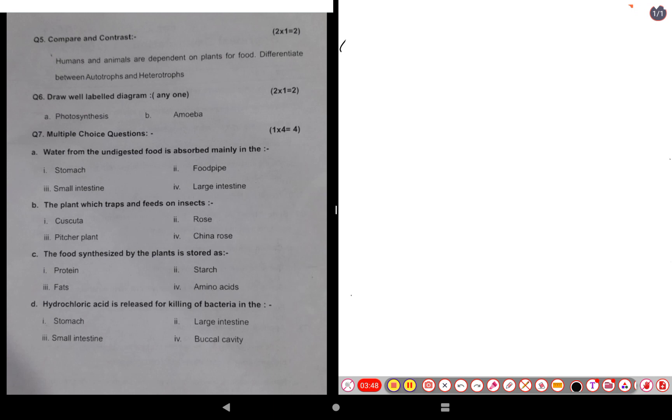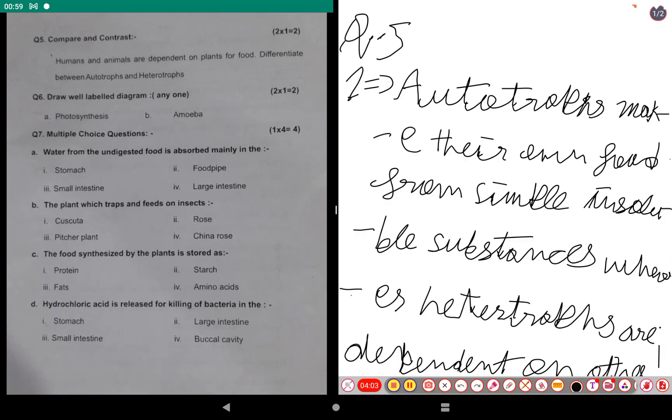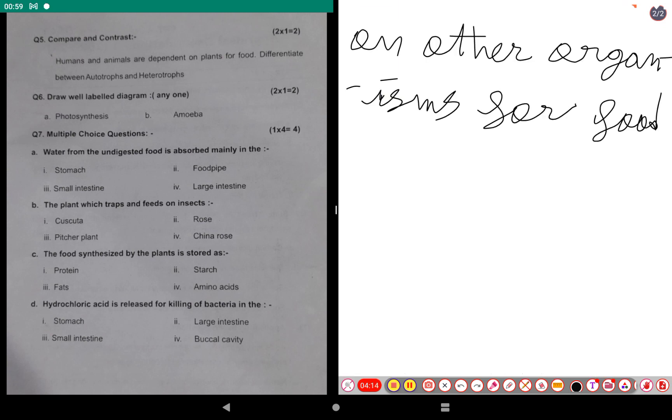Now let's go to the fifth question. Humans and animals are dependent on plants for food. Differentiate between autotrophs and heterotrophs. The answer is: autotrophs make their own food from simple insoluble substances, when heterotrophs are dependent on other organisms for food.